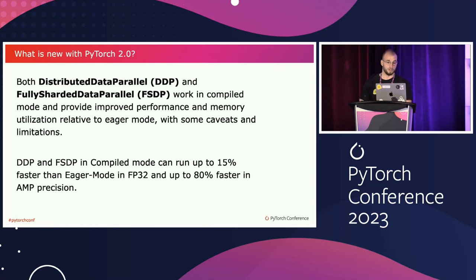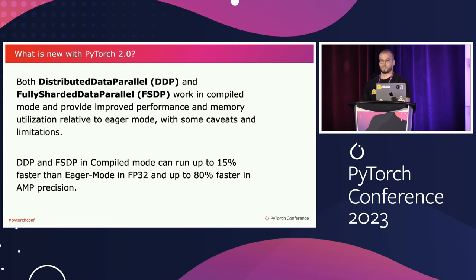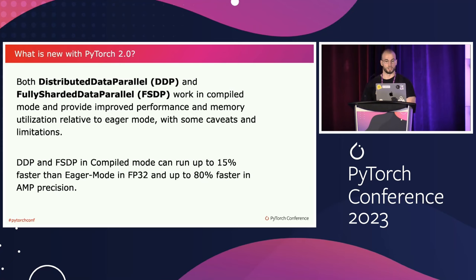It's also super exciting that we have support for DDP and FSDP. Transformer models are becoming bigger and bigger, so most of them don't fit on a single GPU. We want to make sure we benefit from the new exciting features when using bigger models. With PyTorch 2 we already had support for it, and with coming releases FSDP will get even more performance improvements, making training bigger models faster and more cost-effective.